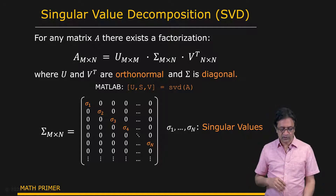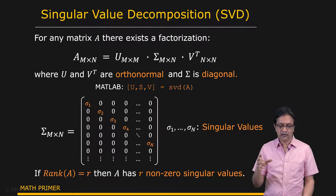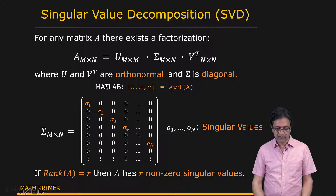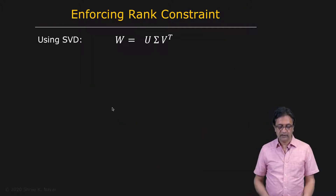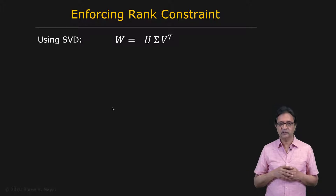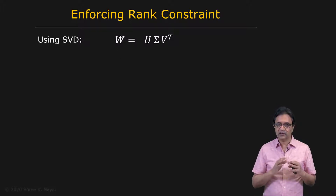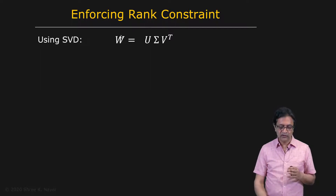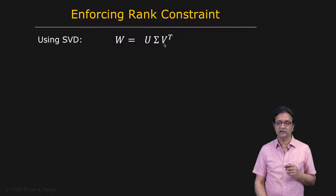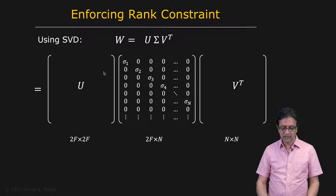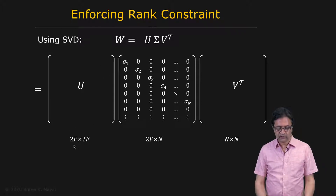Now comes the important part: if the rank of A happens to be R, then there are only R non-zero singular values in sigma. We can now come back to our observation matrix and the rank constraint we have derived. We take our observation matrix W and apply singular value decomposition to it, getting three matrices U, sigma, and V. U is a 2F by 2F matrix.